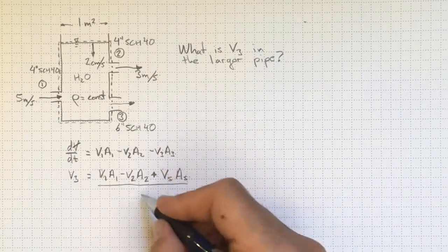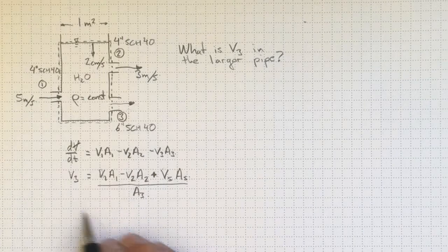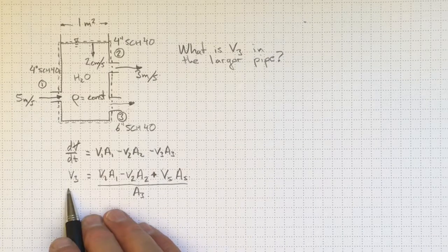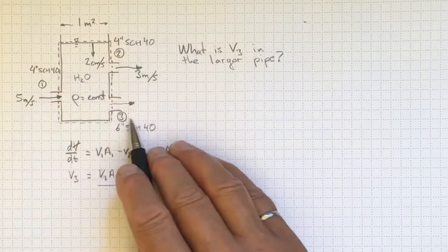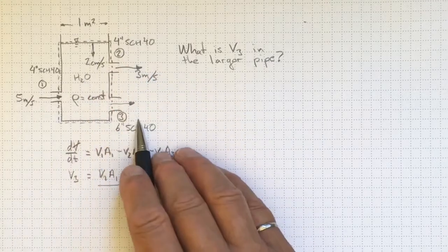Then dividing through by A3, that will allow me to figure out what V3 is. But I don't really know what these areas are, I've just been given pipe sizes.